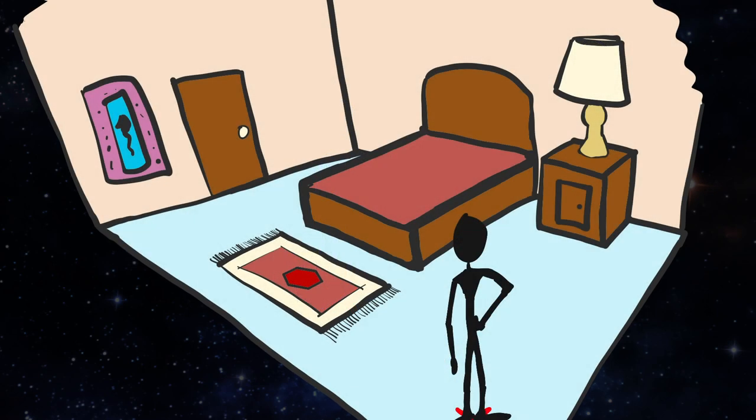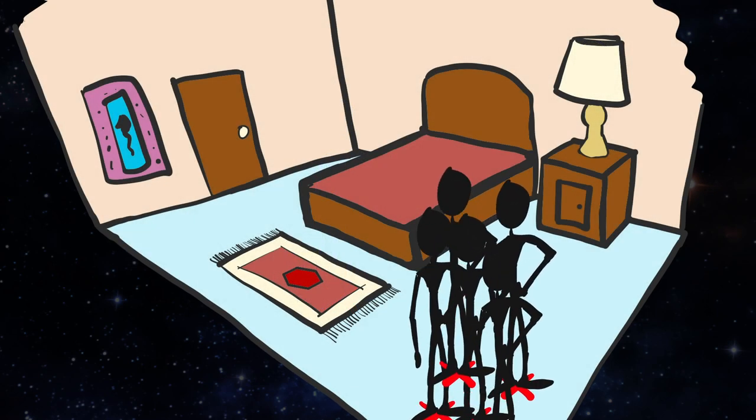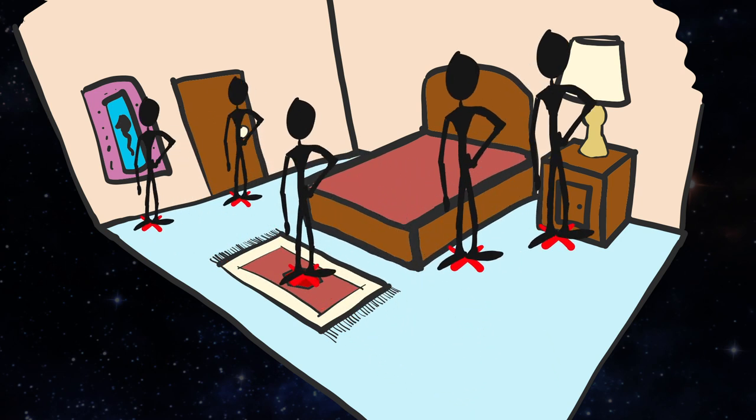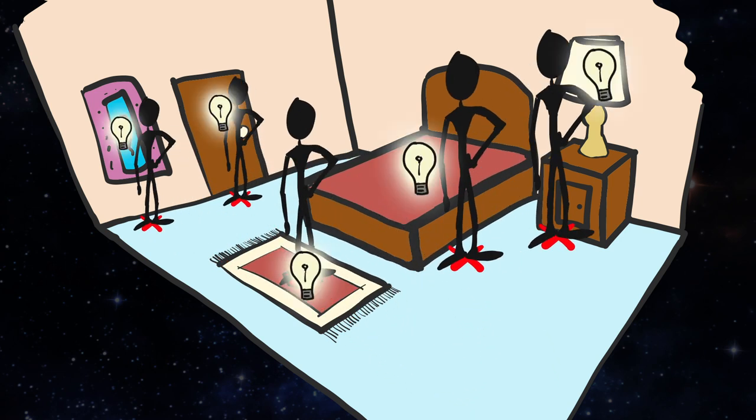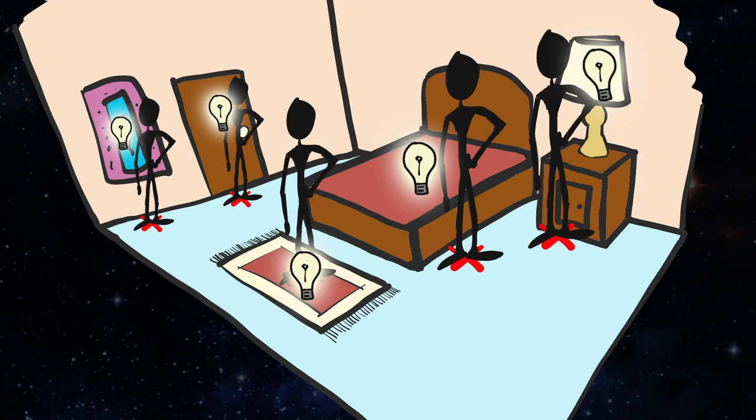Now imagine if there were five copies of yourself in the room, and they could all move around independently. If they all moved to a different feature and shared their findings, they could identify the room by observing only one feature each.